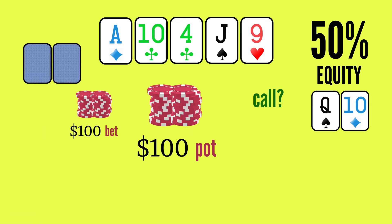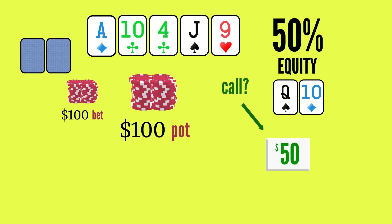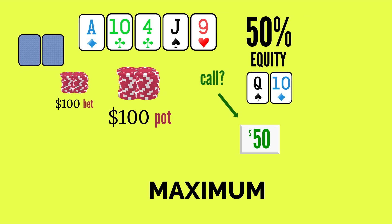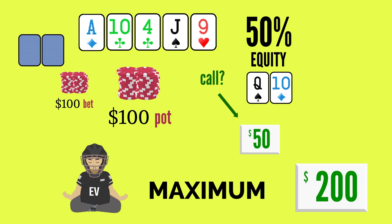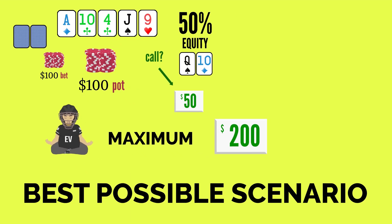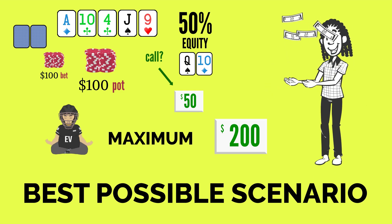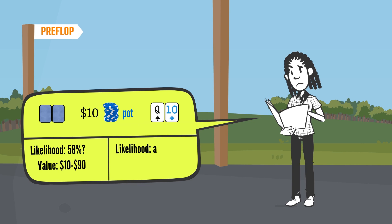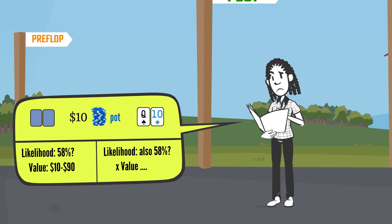Clearly we should make this call on the river, as it's profitable on average. Note that in this particular spot, the maximum EV from this call is $200. Without raising and increasing the pot size, the best possible scenario is that we always win that $200 in the pot.